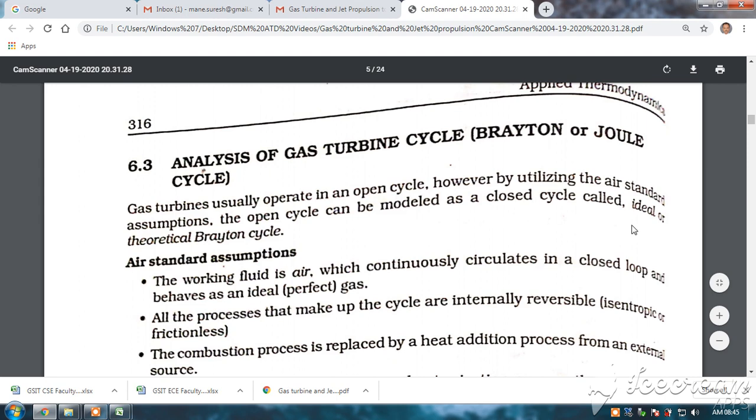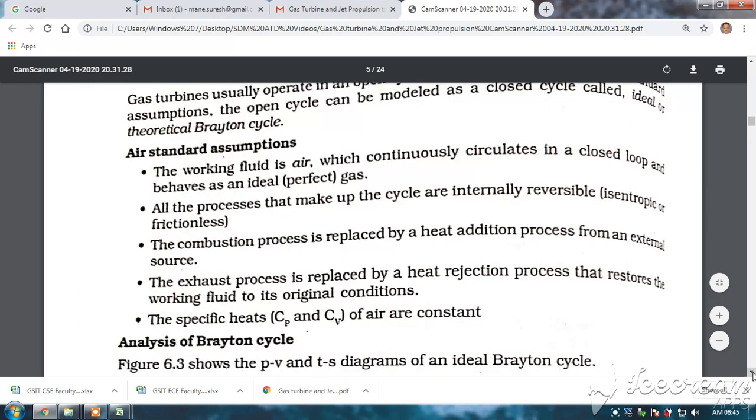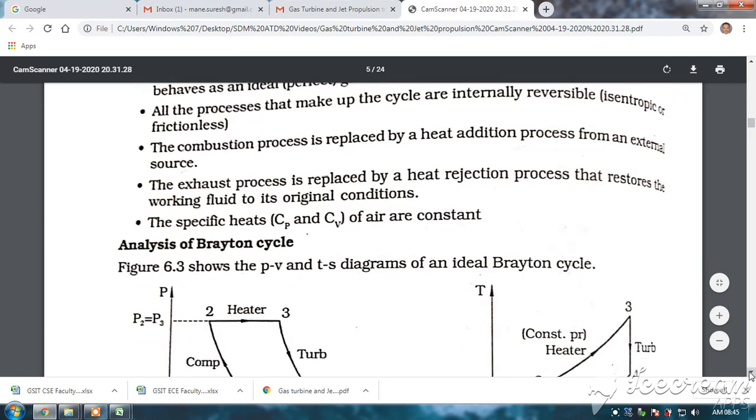We will be modeling the closed cycle gas turbine using the theoretical or ideal Brayton cycle and the assumptions are similar to the gas power cycles assumption like air is used as a working fluid which works as a perfect gas. All the processes are internally reversible isentropic. Combustion process is replaced by heat addition and the exhaust process is replaced by heat rejection and the specific heats are constant. The same five assumptions are there.